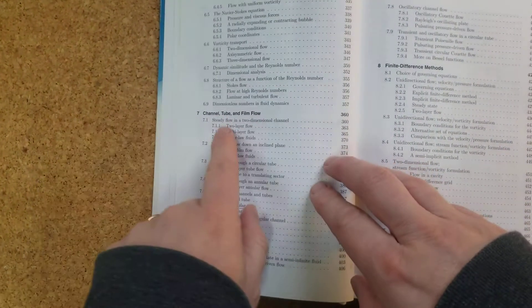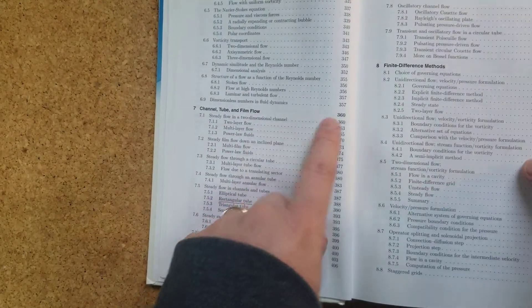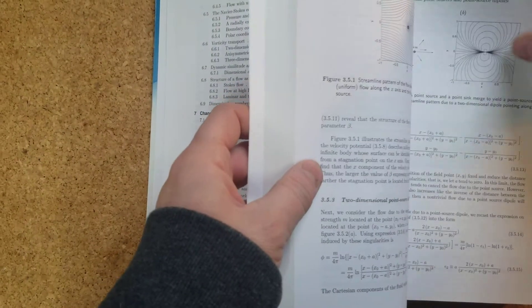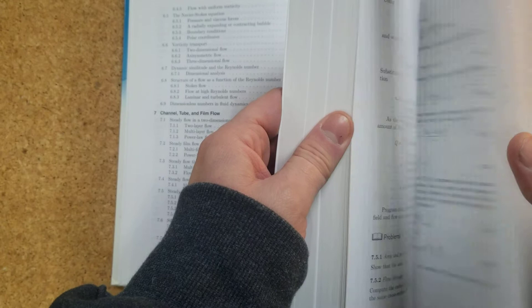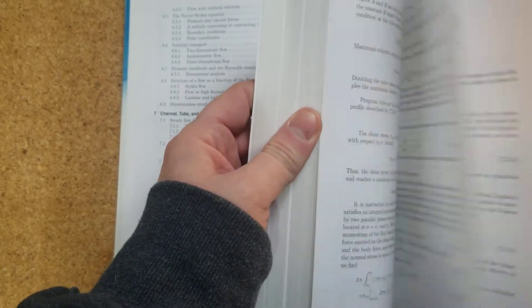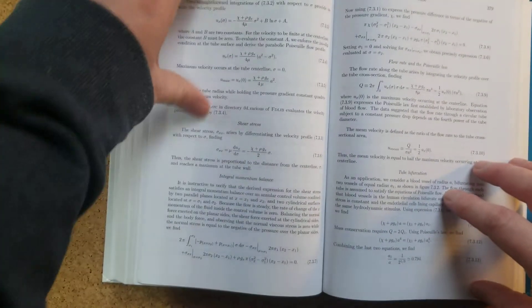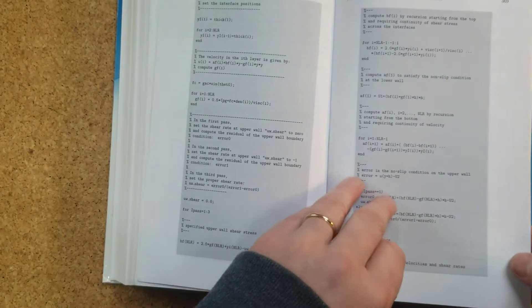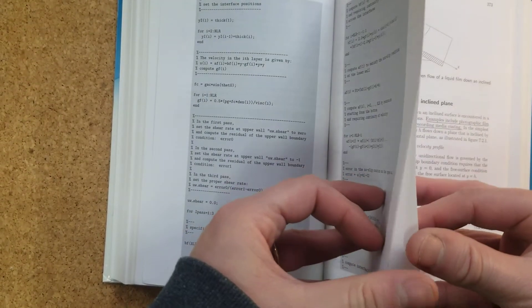So let's see a little bit inside. For example, let's go and look at the channel flow part, page 360. And you will notice that for each chapter, of course, it goes through the theory really rigorously.